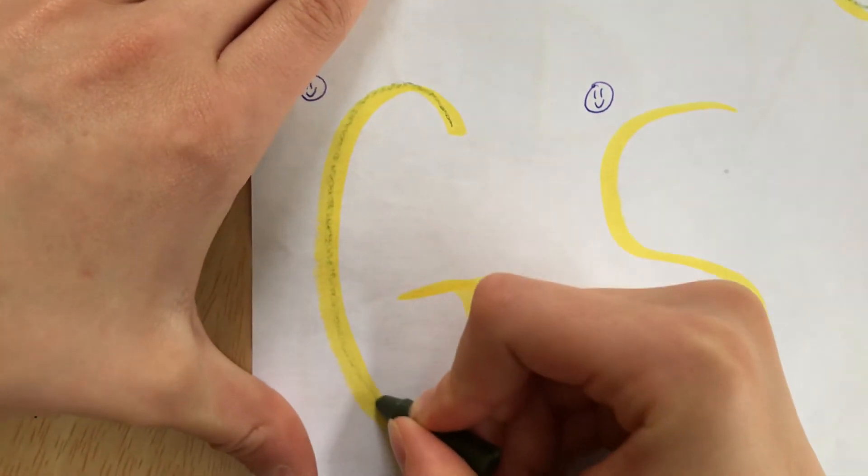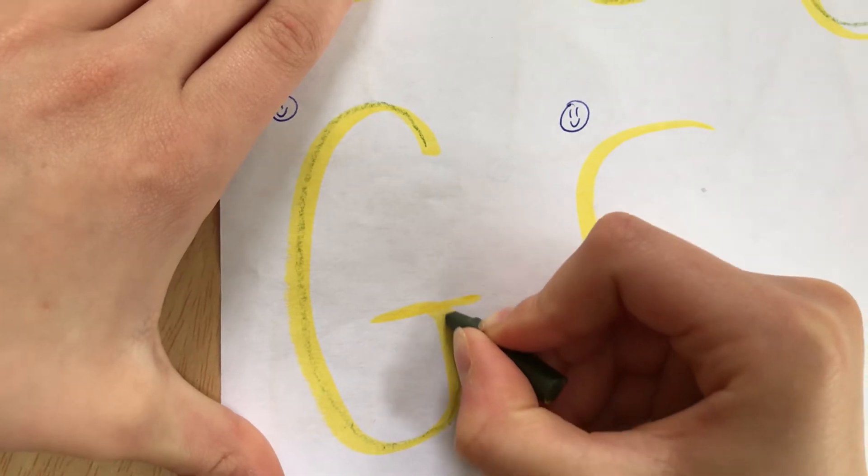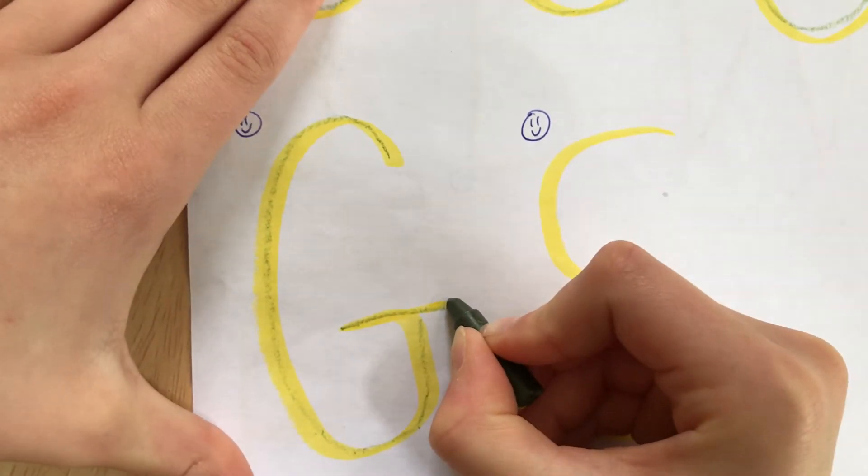Let's try G. Magic C. Little line up. Little line across.